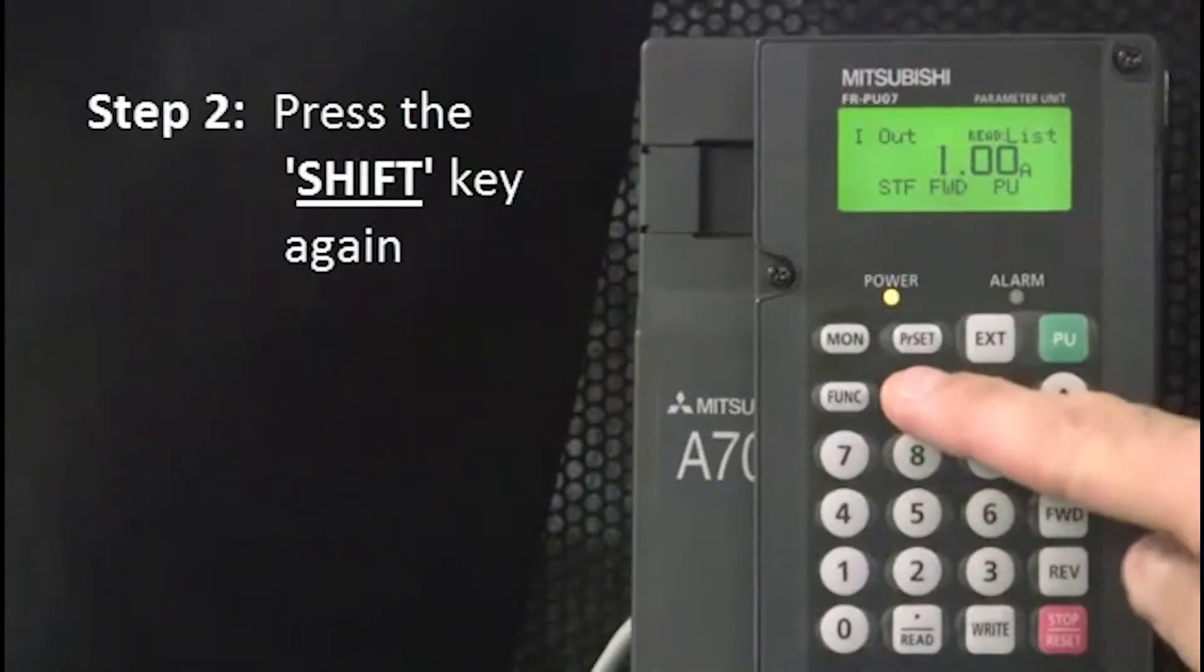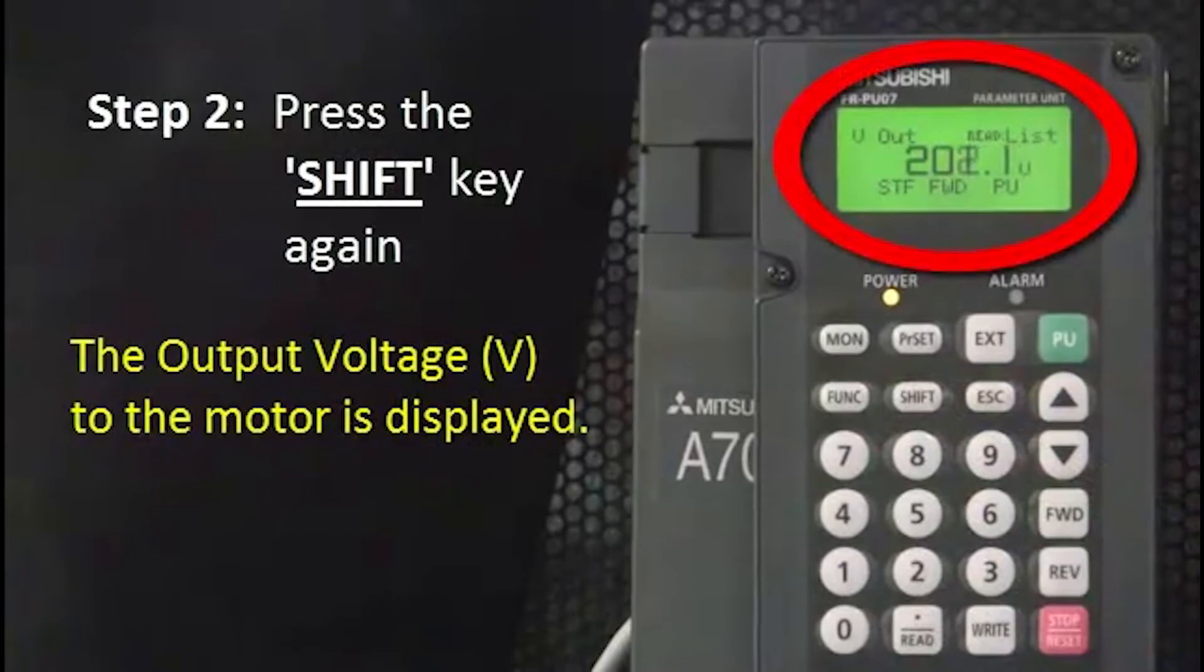Next, press the shift key again. The output voltage in volts to the motor is displayed.